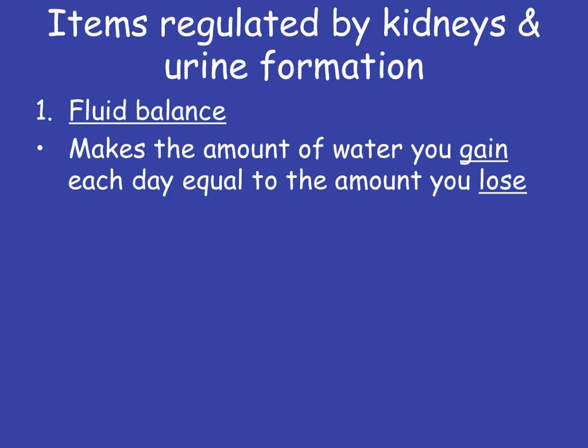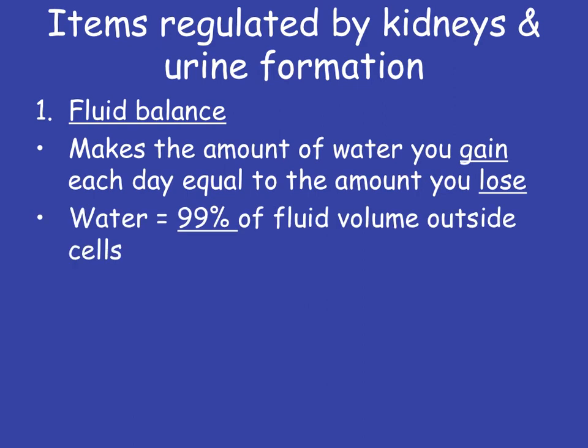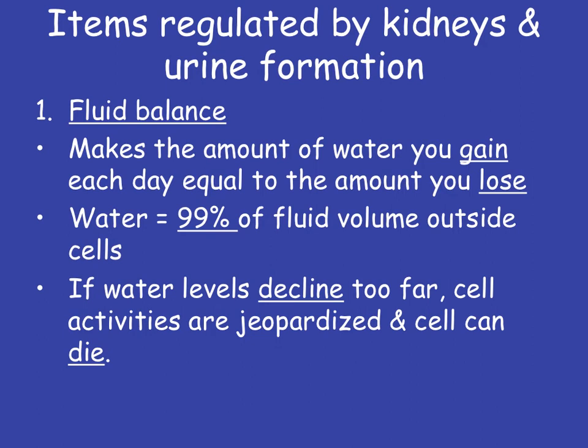The idea is that the amount you lose in urine should equal the amount you take in. Water volume is about 99% of our fluid volume inside of our cells. We need to make sure that water levels stay at the right balance, because if the water levels decline too far, your cell activities are jeopardized and the cell can die. What can happen is the cell can actually shrivel up as you lose that fluid volume — that's what happens when you dehydrate. If enough of those cells start dying, you can have organ failure and death as a result.